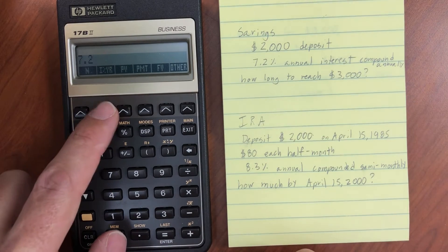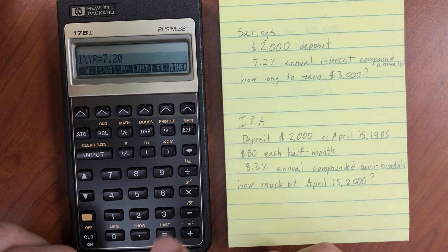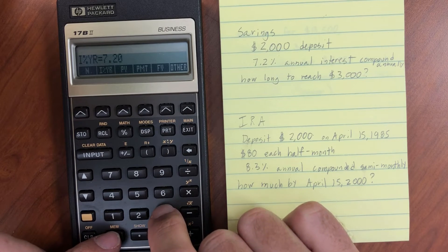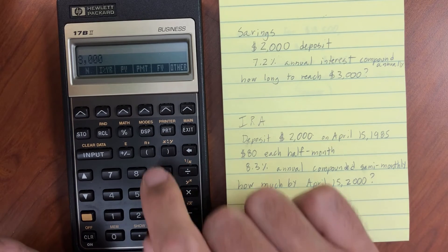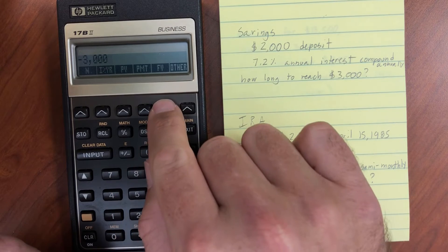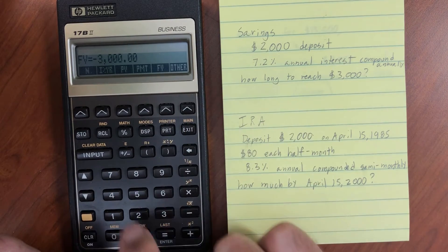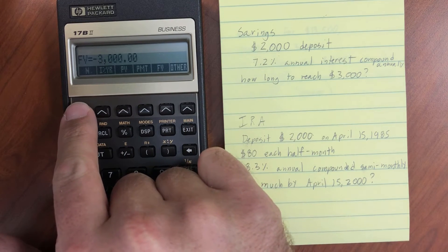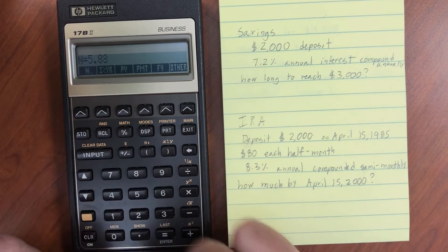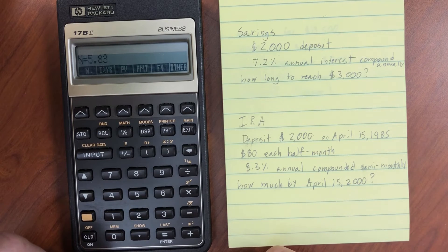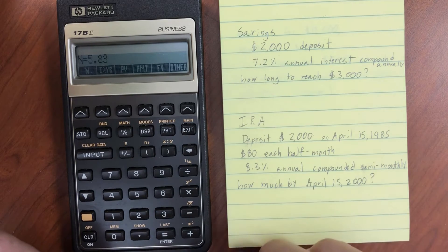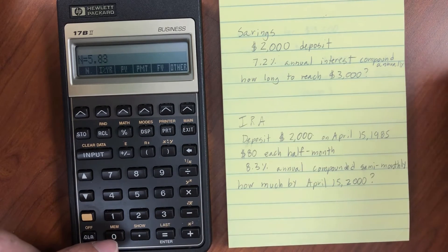And then how long will it take to reach $3,000? Well, first let's enter our 7.2% interest. And then we want $3,000. And let's swap the sign there. This is our future value. And how many periods will it take to get there? It's going to take 5.83 years in order to get to that point. Or 6, since we're compounding annually.